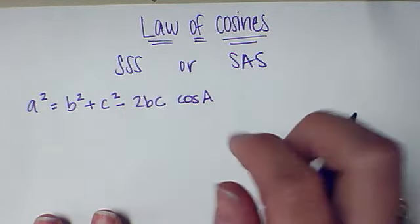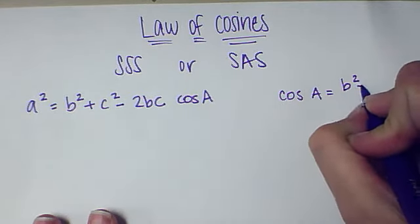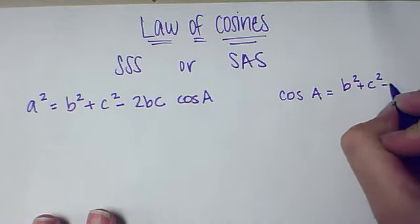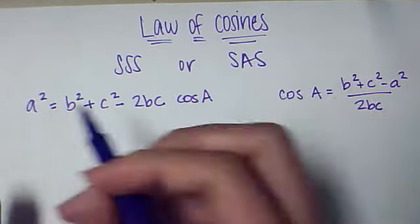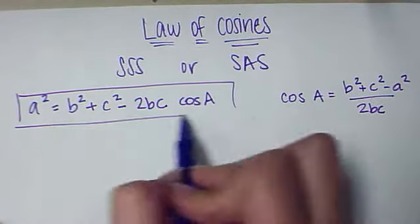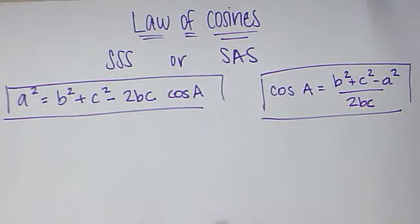Or if you have side, side, side, then you can find the angle by doing cosine of A equals b² plus c² minus a² all over 2bc. Now I'm going to box those in separately. You can use those interchangeably depending on what parts of the triangle that you have.